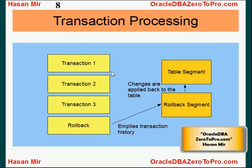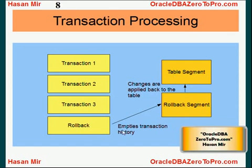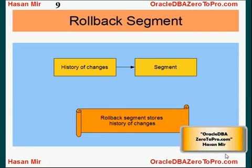Just keep in mind that whatever changes users are applying are actually happening in the table, but the previous states are being stored in the rollback segment. It is not that the changes are stored in the rollback segment and only applied to the table upon commit — it is actually the other way around.